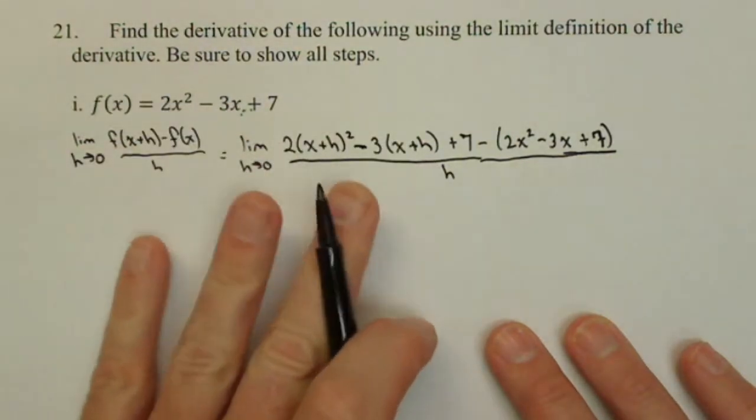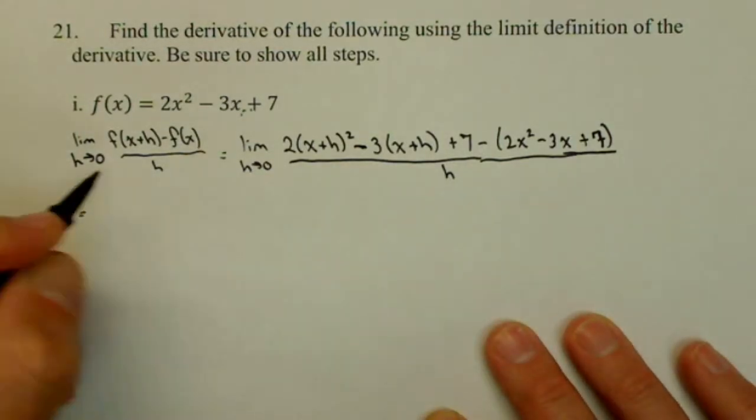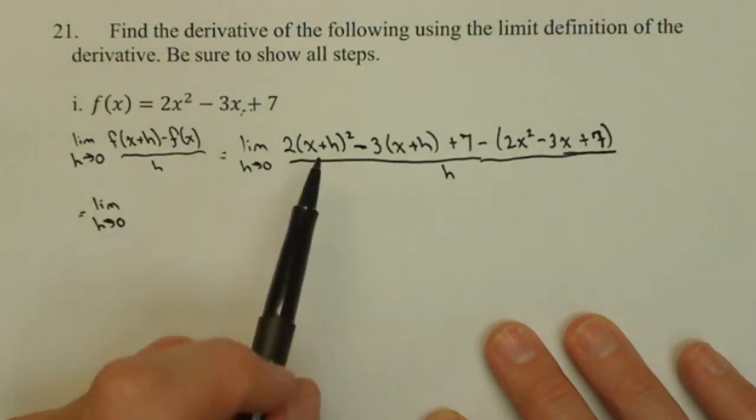Now, right now, if I were to plug in 0 for h, I would get 0 over 0 case, which is an indeterminate form. So, we need to do a little bit of algebra, and that will get us to the correct derivative.